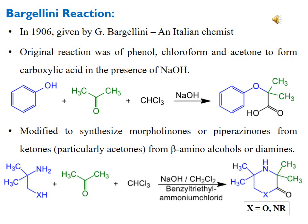The diamine or beta-amino alcohol reacts with ketone and chloroform in the presence of base like sodium hydroxide, with dichloromethane as solvent and benzyl triethyl ammonium chloride as catalyst. If X is oxygen, the product is known as morpholinone. If X is nitrogen, the product is piperazinone — a six-membered ring with two nitrogens at positions 1 and 4, with a ketonic functionality present in the ring.